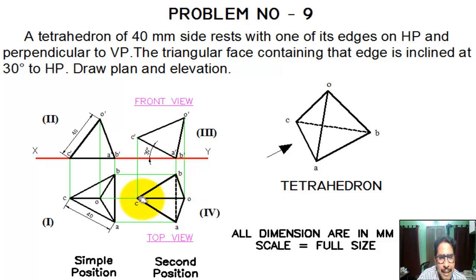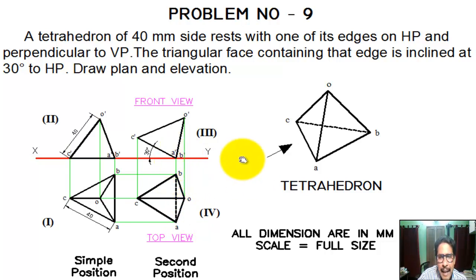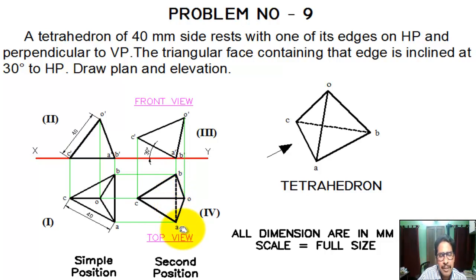We join all the lines. CB line is visible. CA line is visible from the top. OA line is visible. OB line is visible. However, edge AB — that is, A dash, B dash — this edge is not visible from the top, so it is a hidden line, marked as a dotted line. This is the final top view.